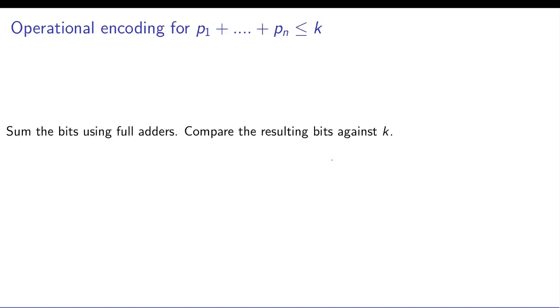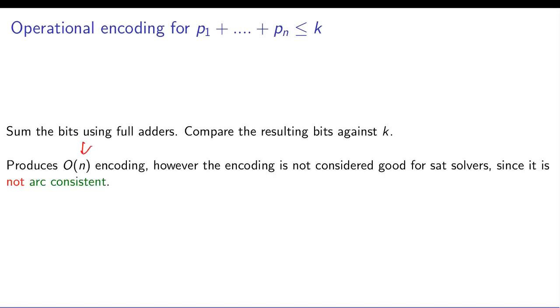So there is another way of doing sum less than k, which is a very naive way you would do if you had not seen this discussion. What do you do? You sum these bits like numbers and use full adders which you must have seen in your digital logic design courses. And then compare the sum against number k which again can be implemented as a boolean circuit. And this circuit can be translated into a boolean constraint. This is an order n encoding however the encoding is not considered good for SAT solvers.